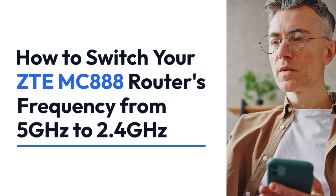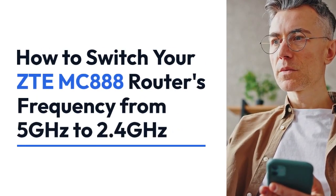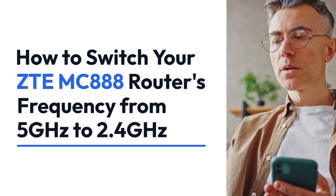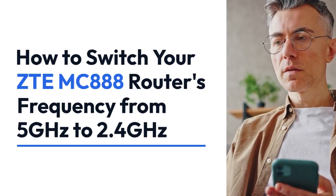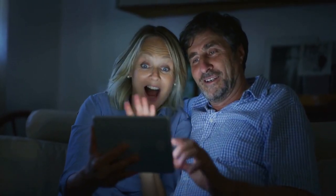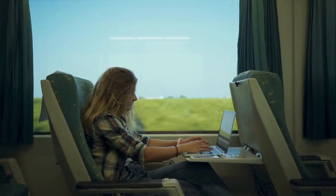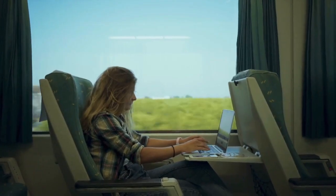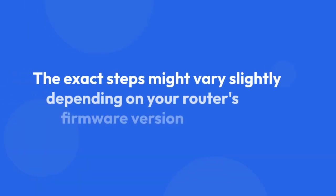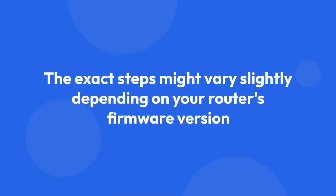We're going to explain how to switch your ZTE MC 888 router's frequency from 5 GHz to 2.4 GHz. This is often helpful for devices that don't support 5 GHz, or if you're experiencing better connection stability on the 2.4 GHz band. Remember that the exact steps might vary slightly depending on your router's firmware version, but the general process should be similar.